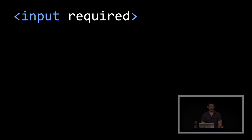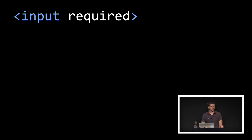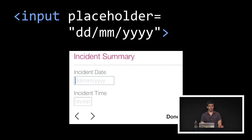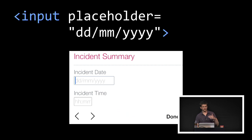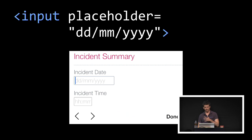Onto the attributes. Required is really awesome — this is HTML5 validation. You can mark a field as required and the browser will validate that for you. Placeholders are really cool because you can give a person an idea of what you'd like them to type in. The problem with placeholders is quite often when you look at them, if you're not really paying attention, it kind of looks like the form field has been filled out already. So there's a bit of a UX situation here where you need to be careful about their use.